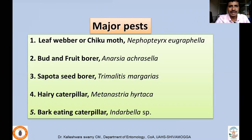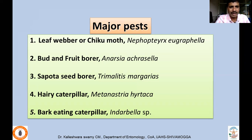We'll be discussing on major pests which includes leafwebber, also called Chikomoth, Napopteryx eugraphylla; bud and fruit borer Anarsia acracella; Sapota seed borer, Trimalitis margaris, one of the invasive pests; Aerie caterpillar, Metanostria hirtaka; and bark-eating caterpillar, Indarbela species. So we'll take one by one.